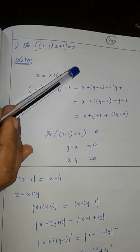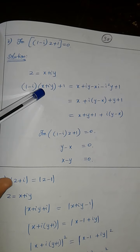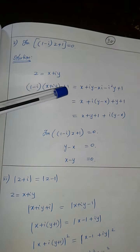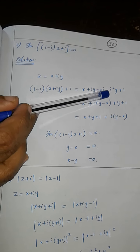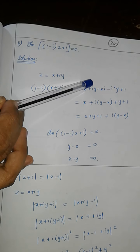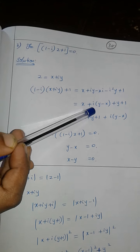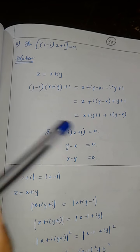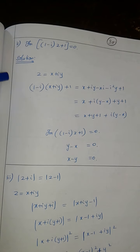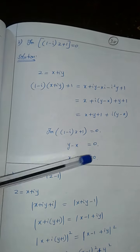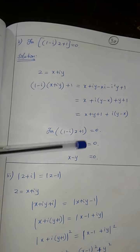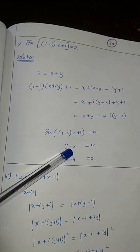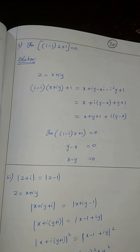Next question: imaginary part of iZ is equal to 3. The value of Z gives us x minus y is equal to 0. Changing position, x minus y is equal to 0.